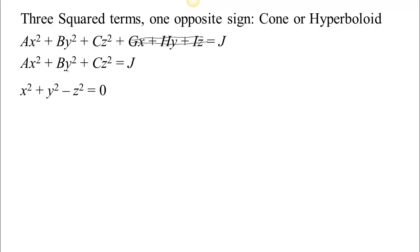But if one of these has an opposite sign — so maybe these two are positive and that one's negative, for example — then you're going to have either a cone or a hyperboloid. The cone is kind of a special or limiting case of the hyperboloid. Let's look at the cone first.